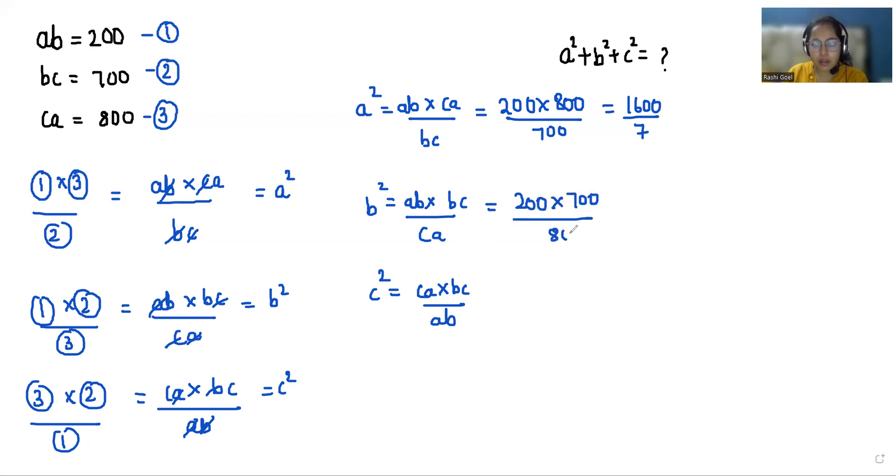Similarly ab is 200 times bc is 700 divided by 800, the value of b² is 1400 by 8. Now ca is 800 multiplied by 700 divided by 200 is 5600 by 2.